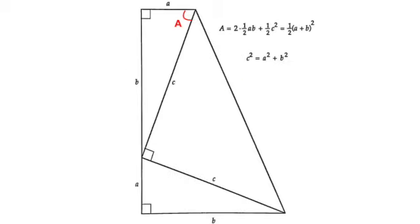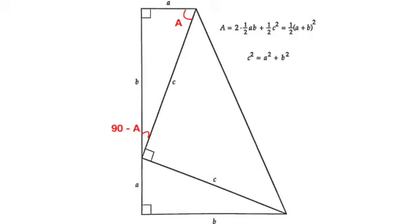We can do some angle chasing here. If we label the angle up here as capital A, then the last angle in the same right-angle triangle must be 90 minus A.